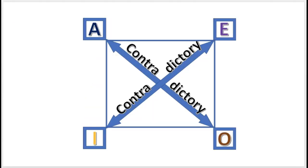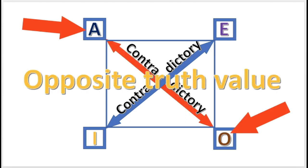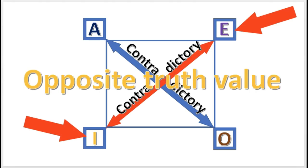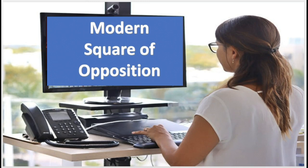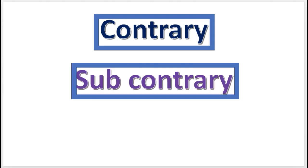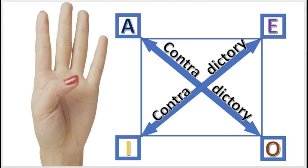Remember from previous lessons, the contradictory relation: A and O propositions contradict — they both have opposite truth values. And likewise, E and I propositions are contradictory; they have opposite truth value. See the video on the modern square of opposition for more information on that. In this video, we're going to see more relations with the square of opposition: namely, contrary, subcontrary, and subalternation, for a total of four relations.